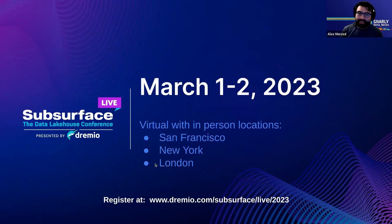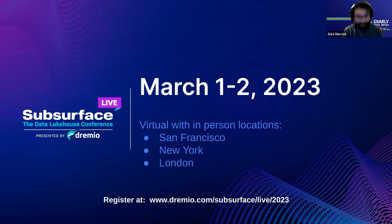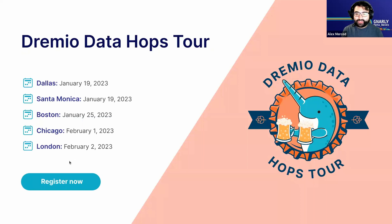Another really big community event is going to be March 1st and March 2nd — it's going to be Subsurface Live, our annual conference about the data lakehouse. You're going to have people talking about Apache Iceberg, Apache Arrow, different data lakehouse implementation strategies, table formats, and all sorts of really fun stuff. For the first time, we're actually going to have some live locations. Go register at Dremio.com/subsurface/live/2023. Also, the Data Hops Tour is coming to a city near you — grab drinks with people here at Dremio and inside the data community.